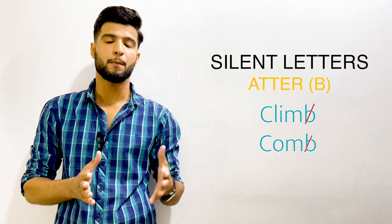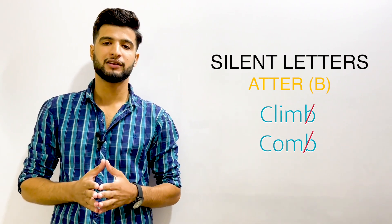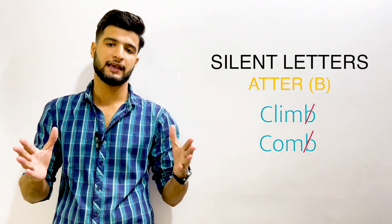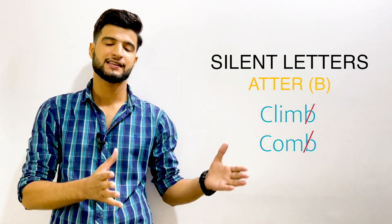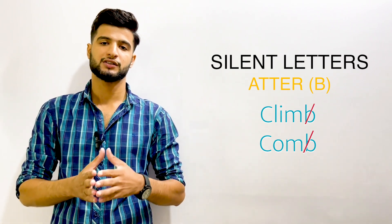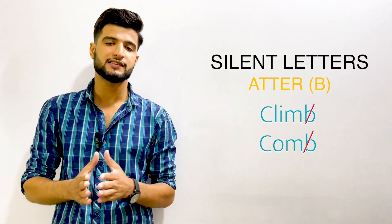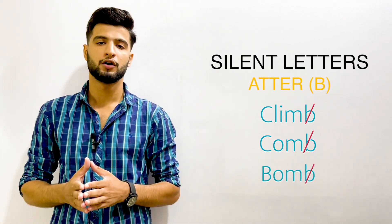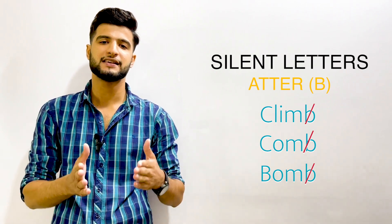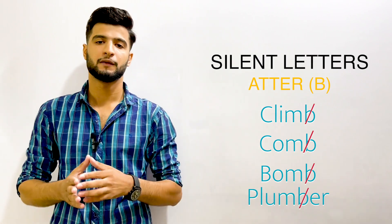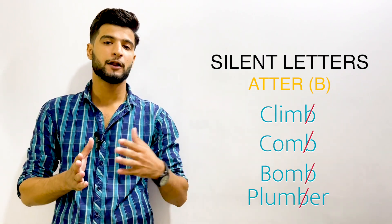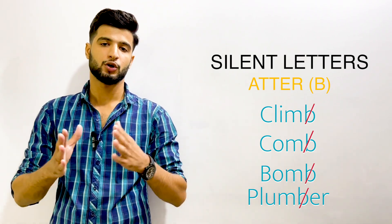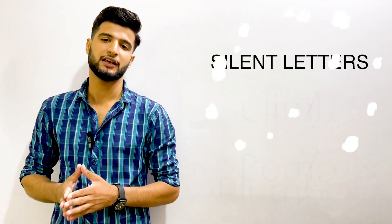Another example is 'comb' — we say 'comb,' not 'com-b,' because B is silent after M. Similarly, 'bomb' is pronounced 'bomb,' not 'bom-b,' and 'plumber' is pronounced 'plumber,' not 'plum-ber.' In all these words, B is silent because it follows the letter M. That covers the letter B.